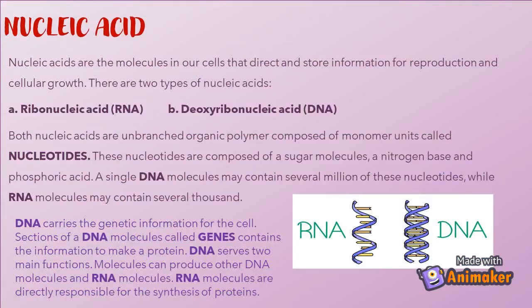Nucleic acids are the molecules in our cells that direct and store information for reproduction and cellular growth. There are two types of nucleic acids: ribonucleic acid (RNA) and deoxyribonucleic acid (DNA). Both nucleic acids are unbranched organic polymers composed of monomer units called nucleotides, which are composed of a sugar molecule, a nitrogen base, and phosphoric acid.